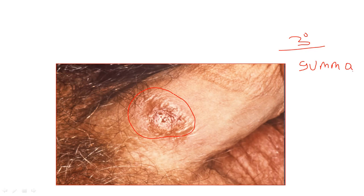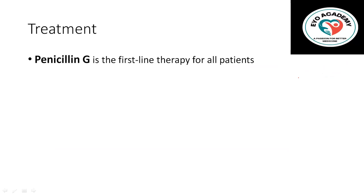Tertiary syphilis is characterized by granulomas, which we call gummas. When you see the term gumma — a granulomatous lesion — this is the tertiary stage. Tertiary syphilis can cause irreversible organ damage to any organ. For example, remember the term syphilitic aortic aneurysm when the heart or aorta is involved. The treatment of syphilis is penicillin G — it is the preferred therapy for all patients.